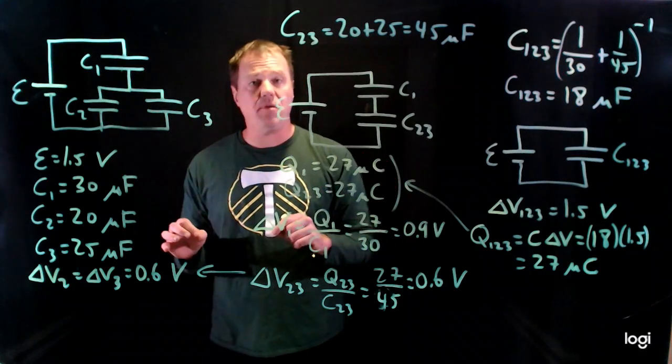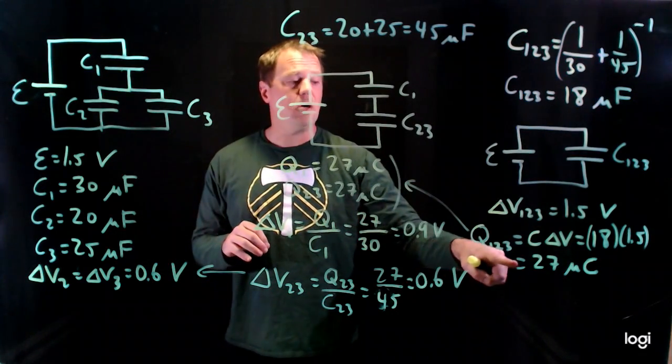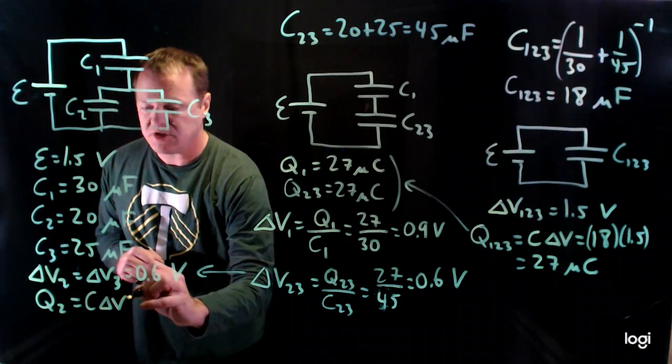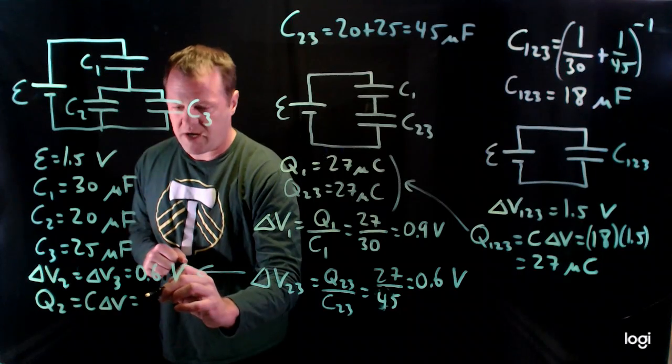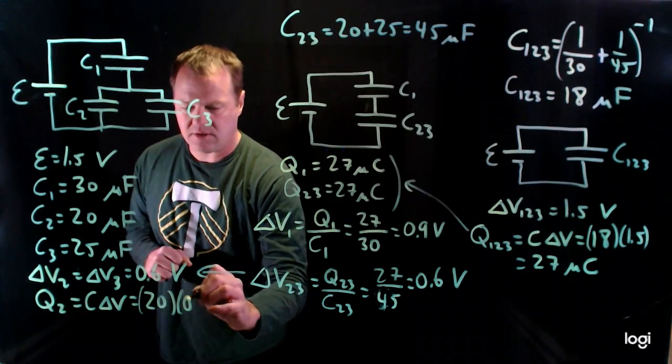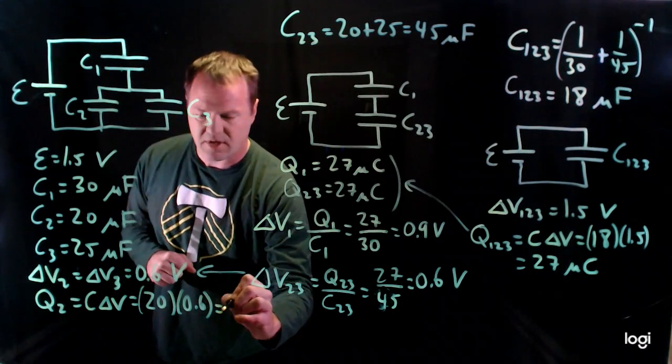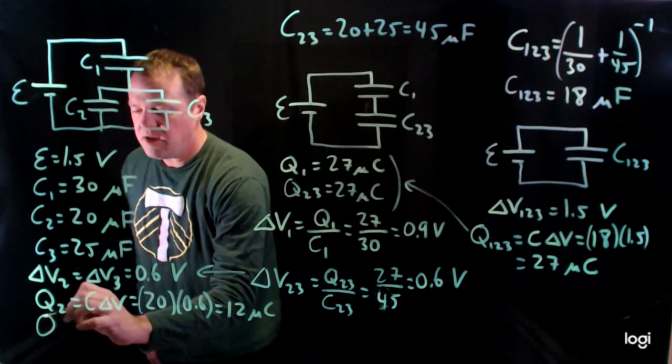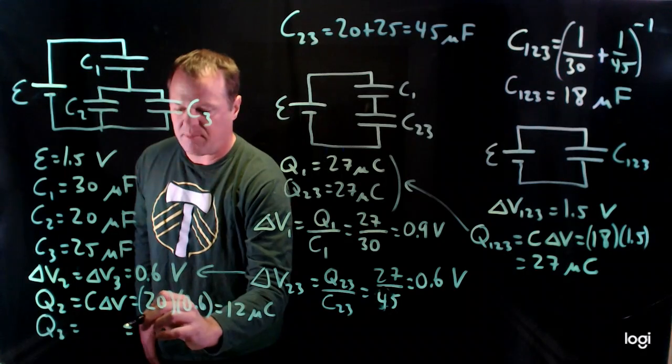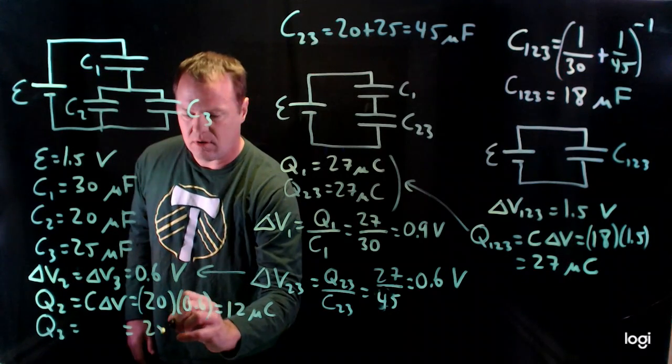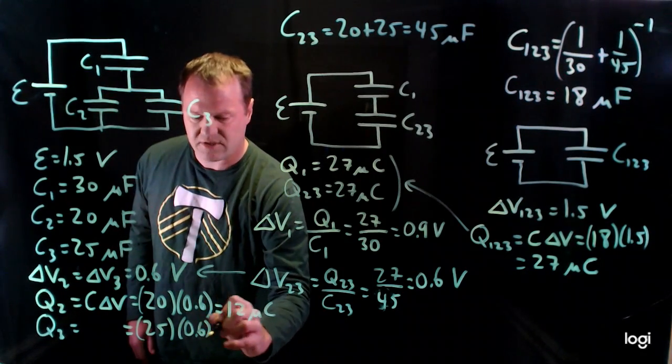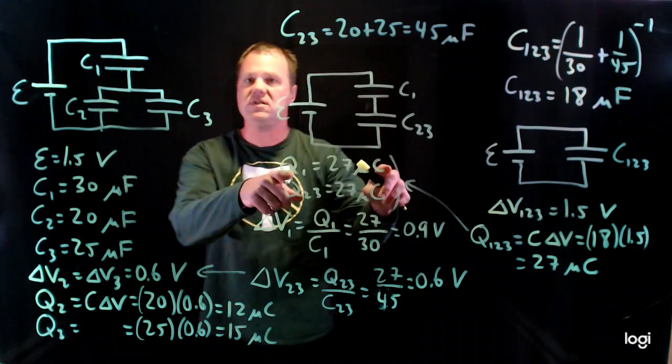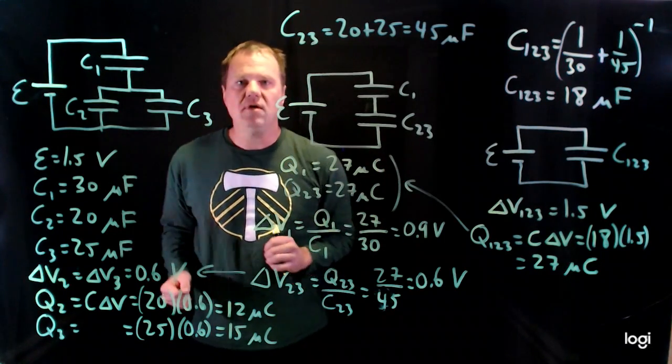So I need to use the formula for definition of capacitance solved for charge like I did earlier in order to calculate the charge. So Q2 will just be C delta V. So its capacitance is 20 microfarads and the voltage is 0.6. So I get 12 microcoulombs. So it gets 12 of the 27 that the group got and then Q3 using the same formula, it has a capacitance of 25 and a potential difference of 0.6 and I get an answer of 15 microcoulombs. So the group that had 27 microcoulombs got split between those two individuals, 12 and 15 microcoulombs.